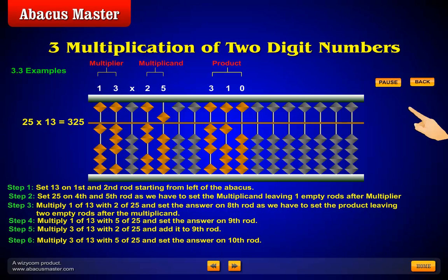Step 6. Multiply 3 of 13 with 5 of 25 and set the answer on tenth rod. Step 7.